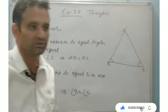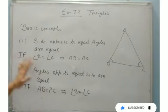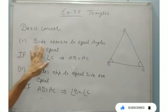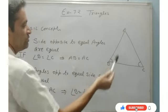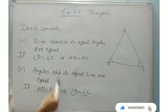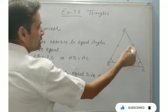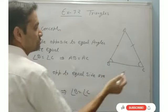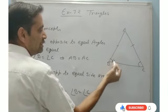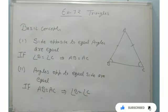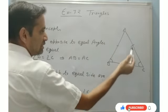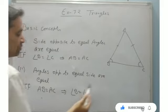There are two basic concepts we have to use — they are vice versa to each other. First: if the sides opposite to equal angles are equal. Means in this triangle, if angle B and angle C are equal, it implies that AB will equal AC. Similarly, the vice versa is: angles opposite to equal sides are equal. Means if side AB and AC are equal, then the opposite angles B and C will be equal.